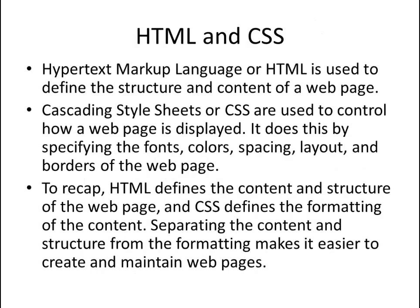HTML and CSS: Hypertext Markup Language, or HTML, is used to define the structure and content of a web page. Cascading Style Sheets, or CSS, are used to control how a web page is displayed — specifying the fonts, colors, spacing, layout, and borders. HTML defines the content and structure of the web page; CSS defines the formatting of the content. We separate the content and structure from the formatting, which makes it easier to create and maintain your web pages.